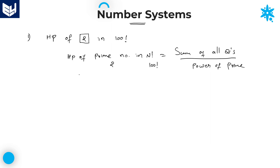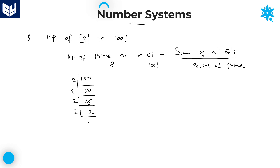We need to calculate the highest power of 2 in 100 factorial. First, divide 100 by 2: 50 times. Again divide by 2: 25 times. Again divide by 2: 12 times. Again divide by 2: 6 times. Next: 3 times. Next: 1 time.